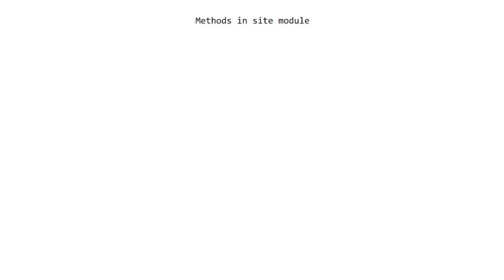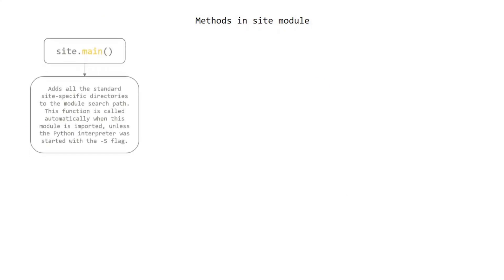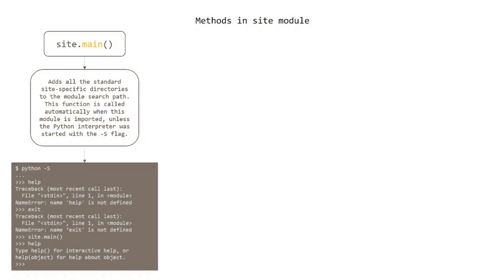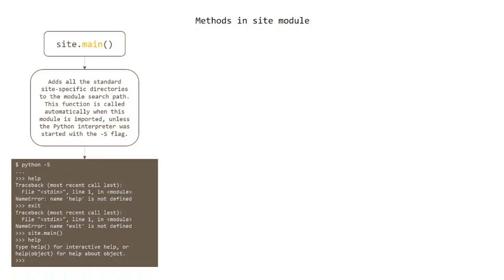Methods in the site module: the main() method adds all the standard site-specific directories to the module search path. This function is called automatically when this module is imported, unless the Python interpreter was started with the -S flag. See the example.